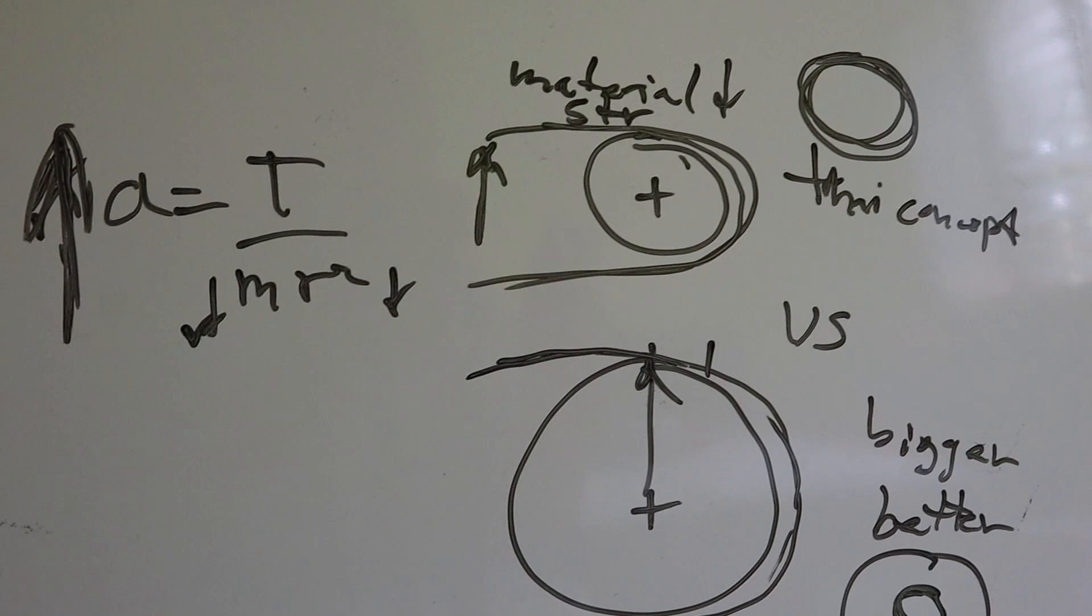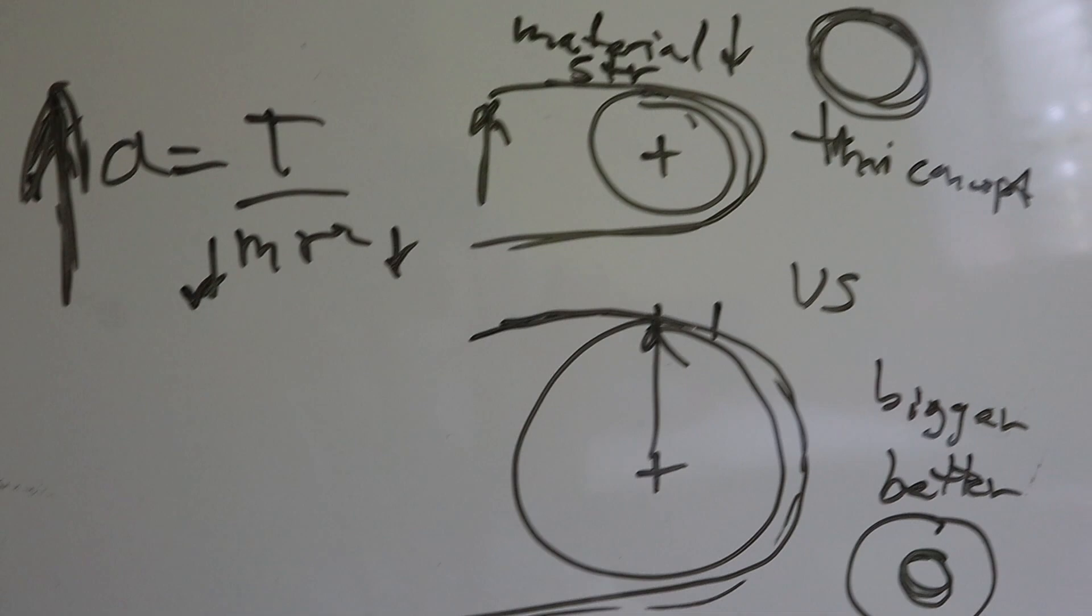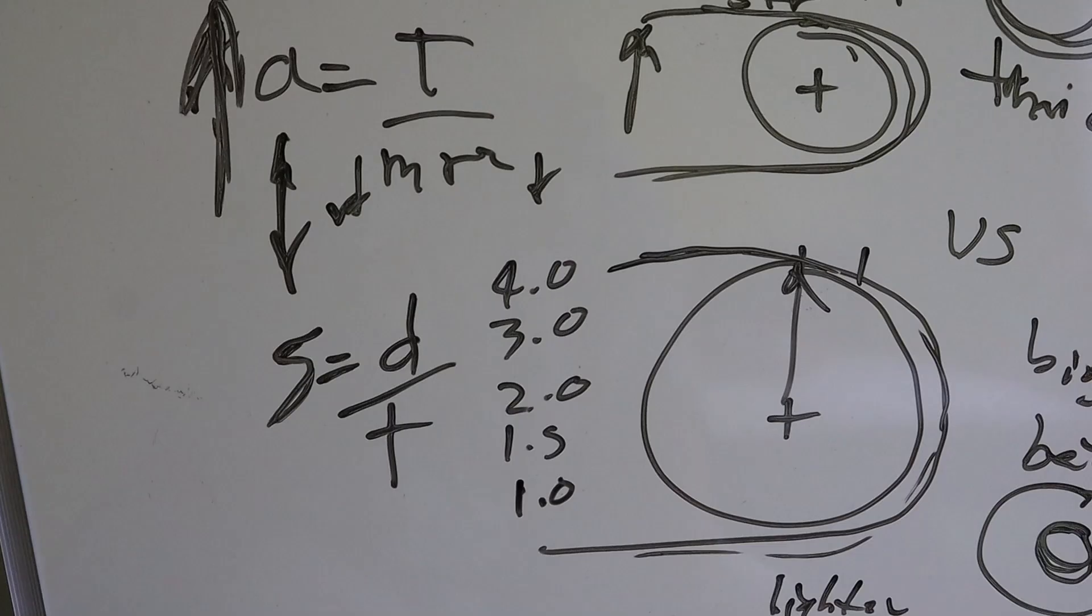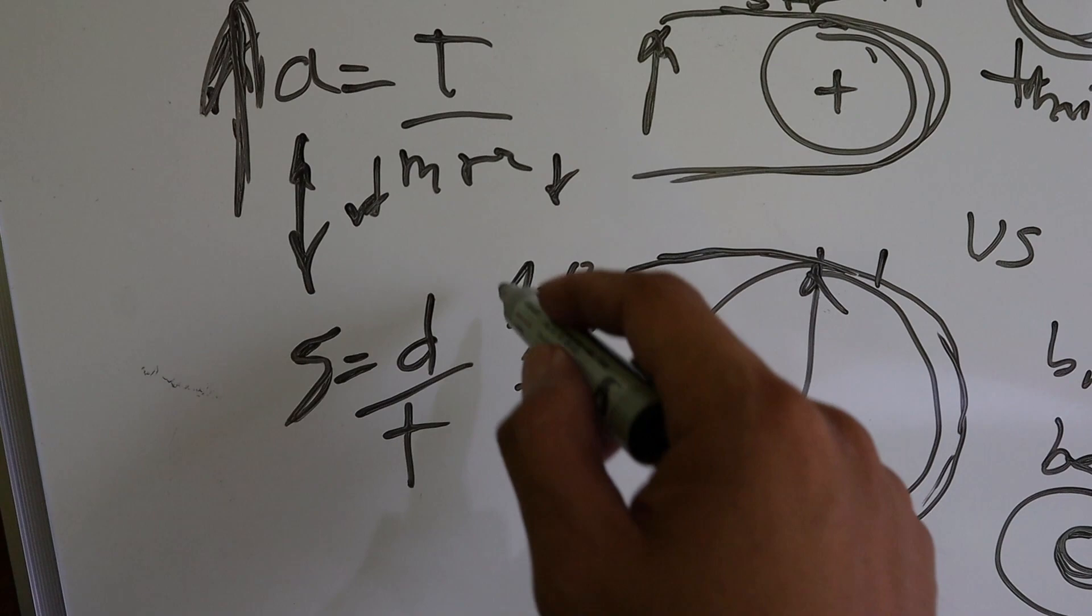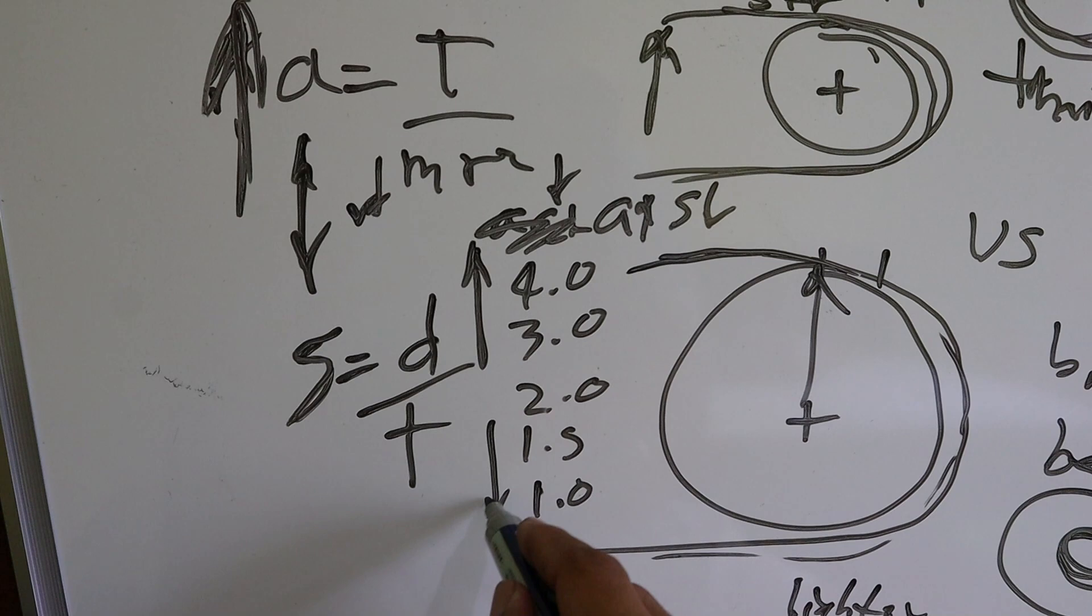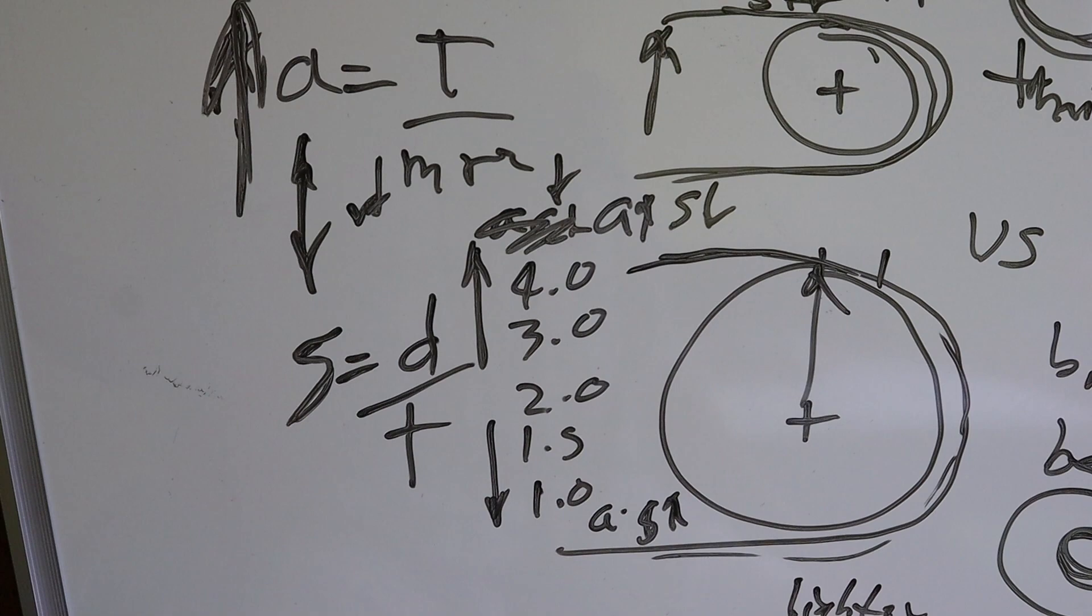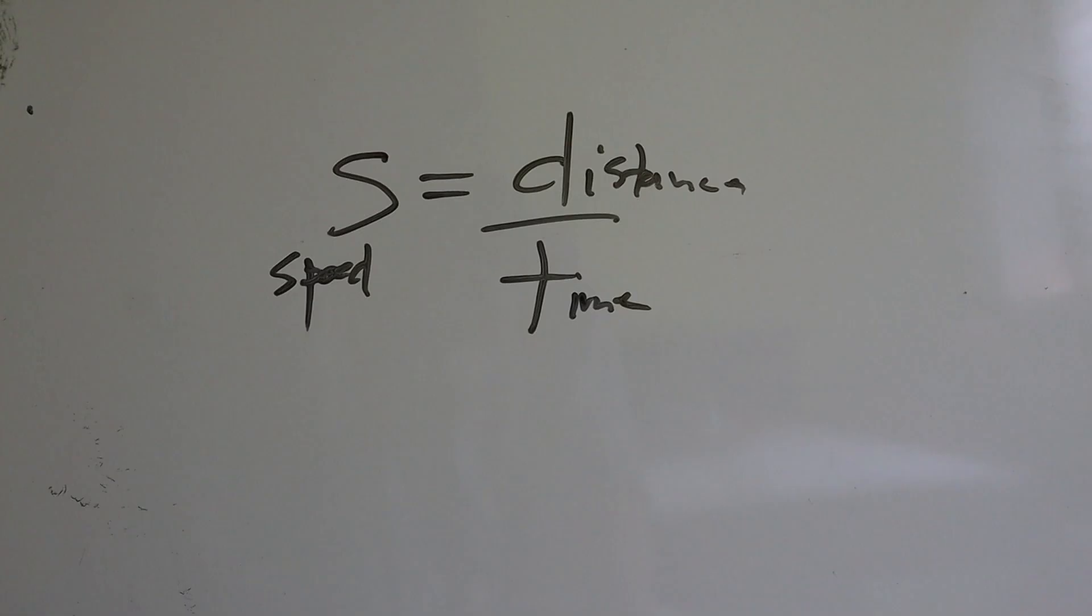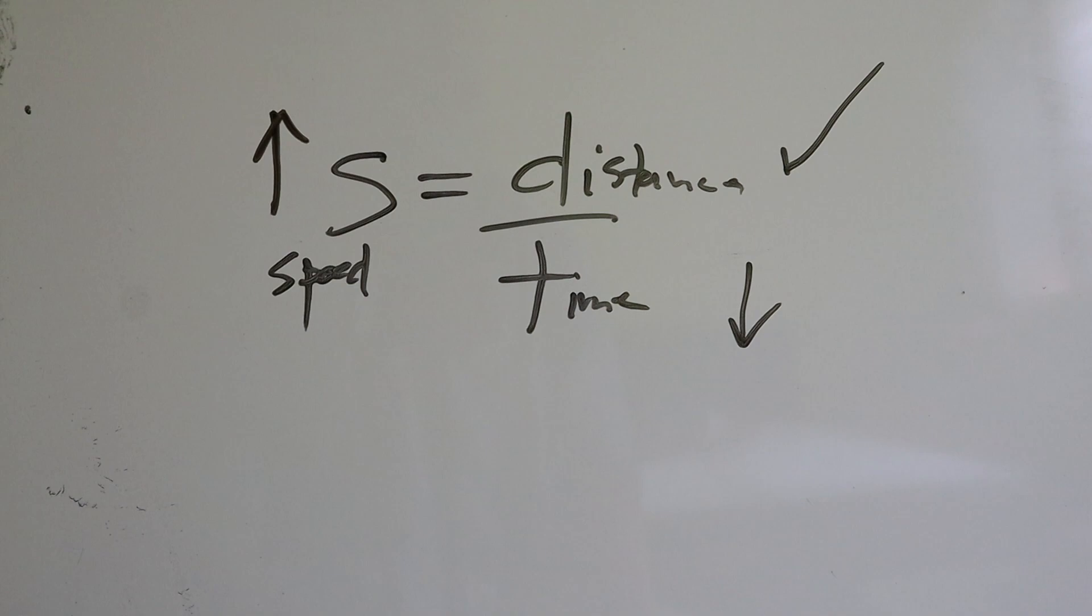Pupunta na tayo sa speed. Acceleration and speed, although related sila, they are not the same. Bakit ngayon bumababa ang speed ng low speed sprocket? 4.0, 3.0. The greater the ratio, mas mataas yung sinasabi nating acceleration at mas bumababa ang speed. While on the other hand, naman gumami tayo ng lower ratio or high speed combinations, bababa ang ating acceleration pero tumataas ang speed. Speed: the greater the distance covered in a shortest period of time, the greater the speed.